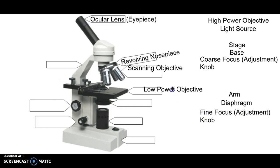The first one is the scanning objective, then the low power, and then the high power objectives are all of these little lenses that hang down that help change the magnification of the specimen that you're looking at.